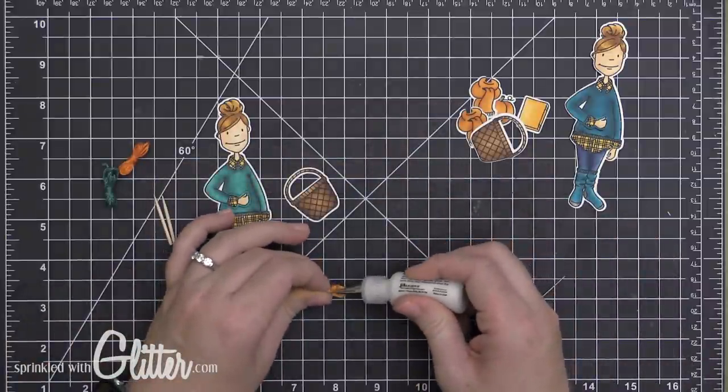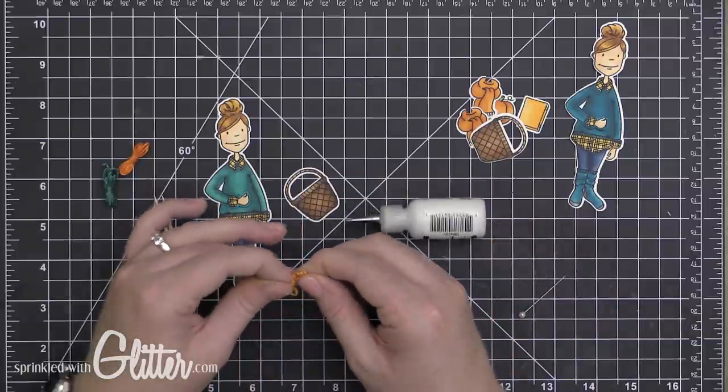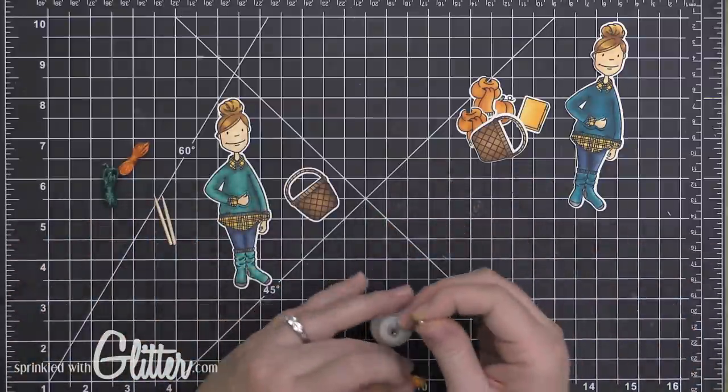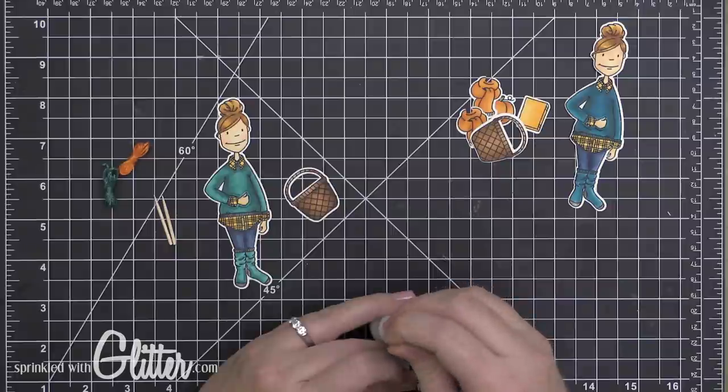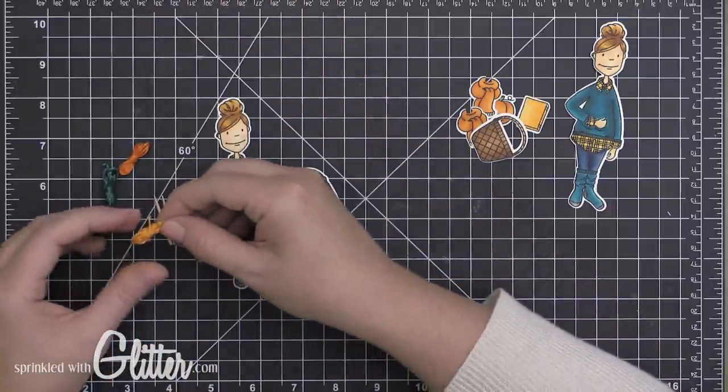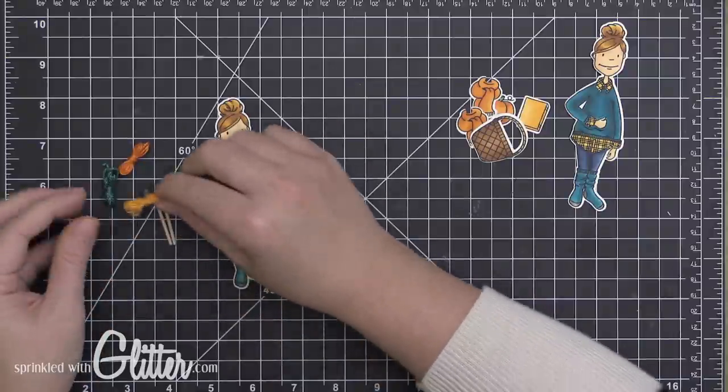Once I get to this point, I'm going to wrap that tail that I left out around the center of that bundle. Then I'm going to take my Ranger Multi-Medium Matte Finish Adhesive and put a drop there to hold this bundle all together. I'm going to press that tail onto there so that I have my adorable little miniature yarn bundle.